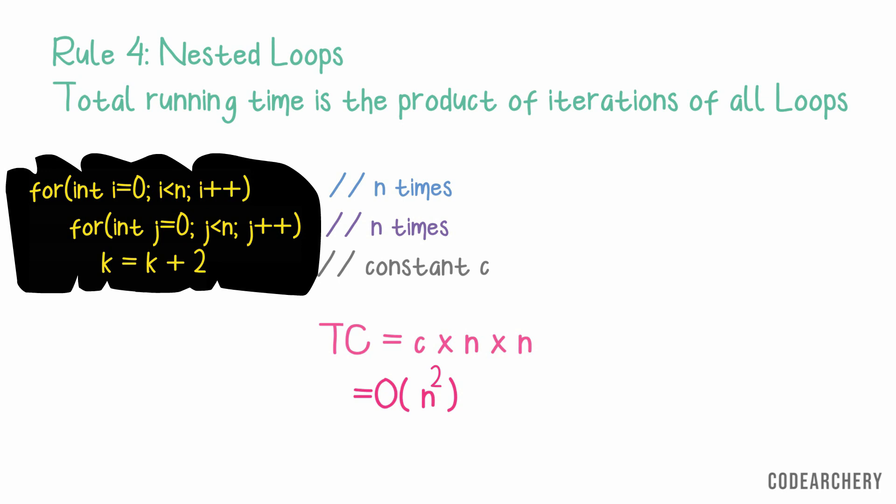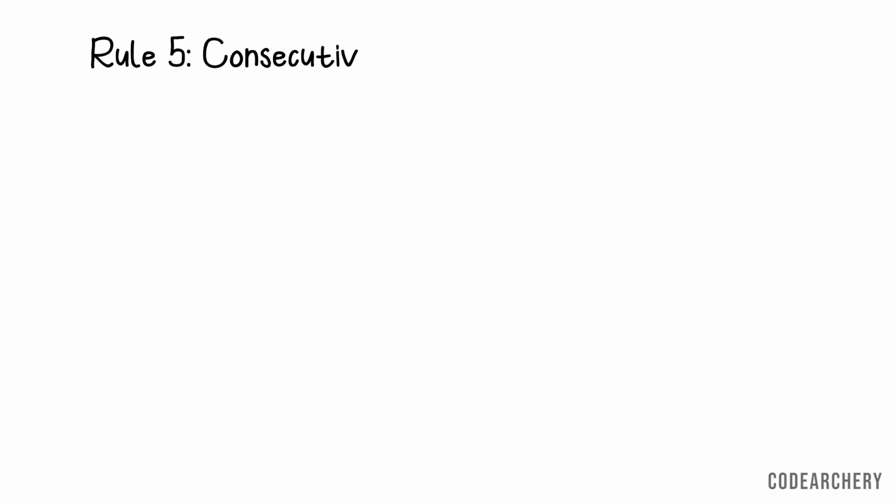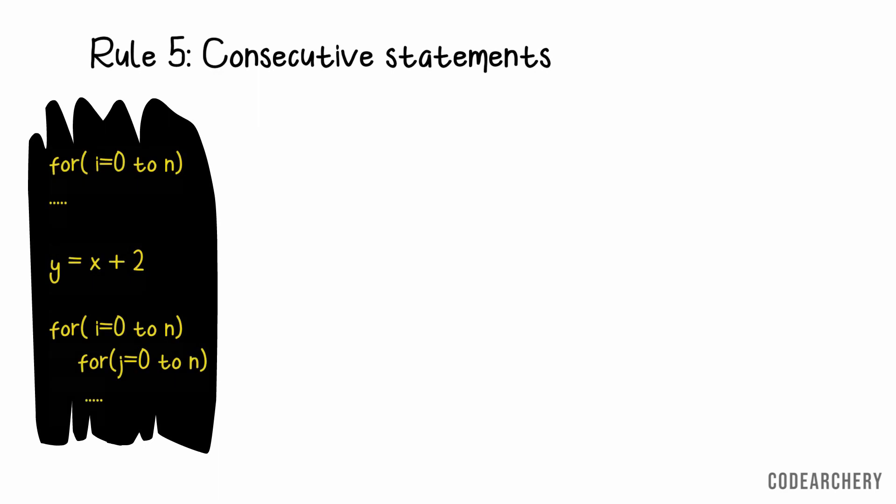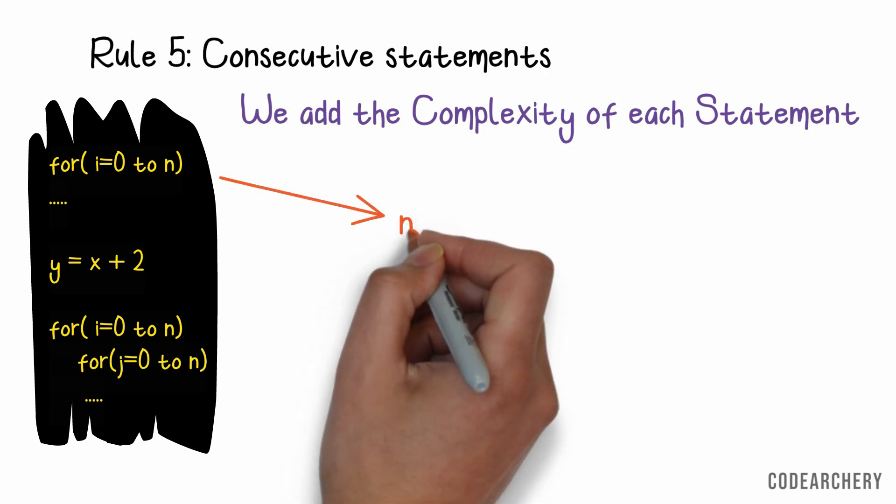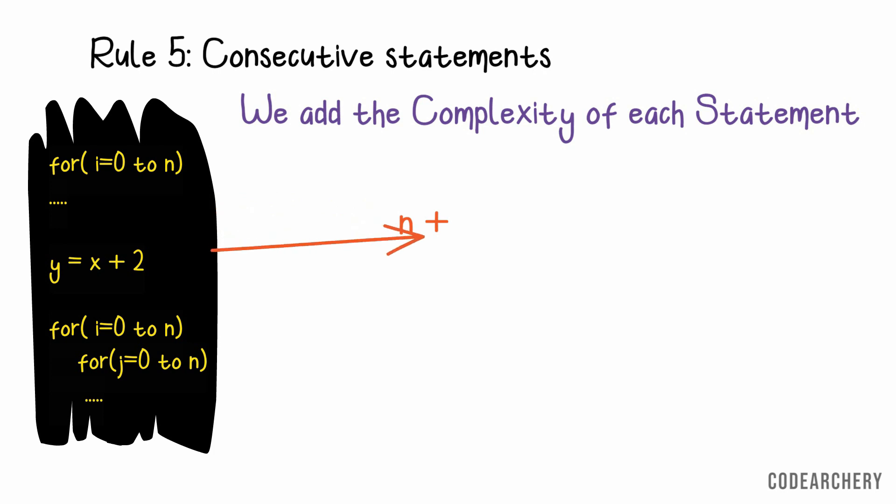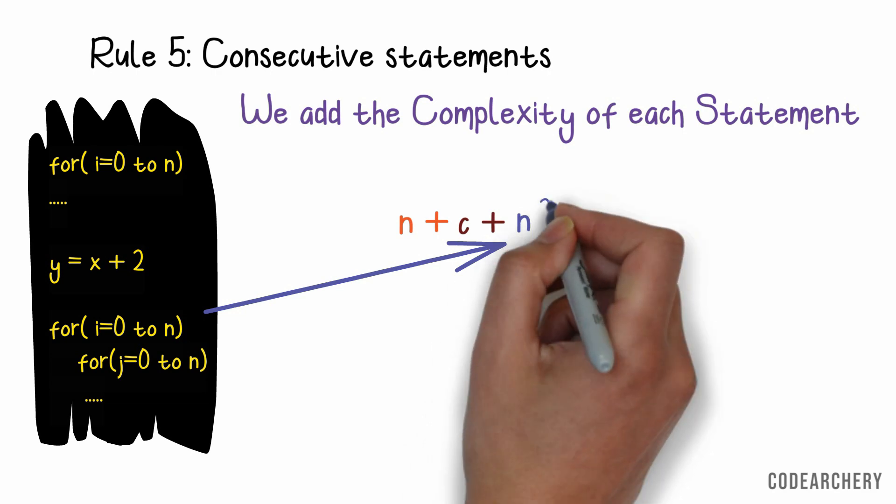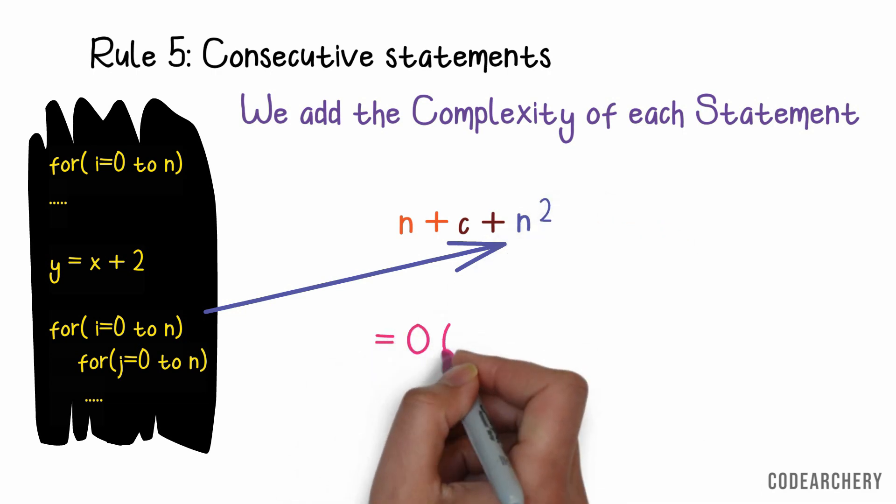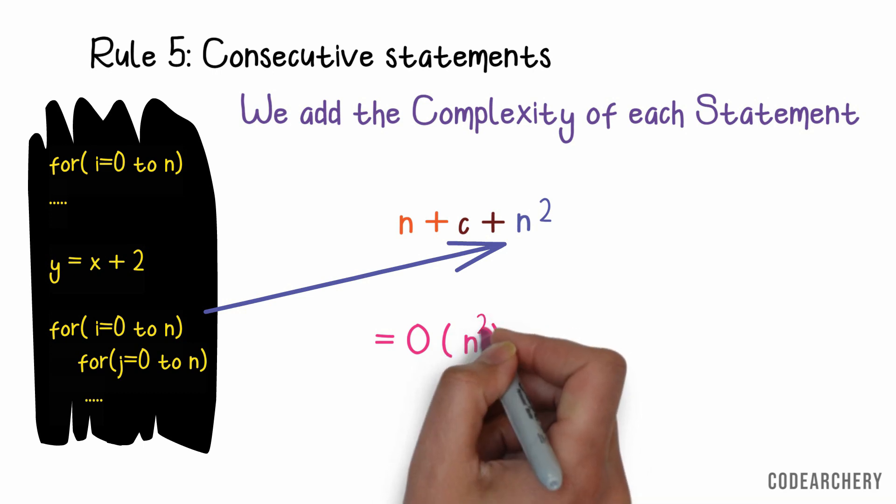Now, rule number 5 is for consecutive statements. Usually, we don't have a single for loop in our code. So, in this code sample, we have a loop, a single statement and a nested loop. So, what is the time complexity of this code? For such consecutive statements, we add the complexity of each statement. So, the first loop iterates for n times. So, n plus we are doing one additional operation. So, it will take constant time that is c plus a nested loop that is n square. So, by our first rule, we know that time complexity for this equation is n square. So, this was rule number 5.